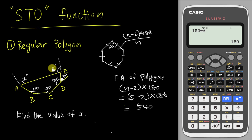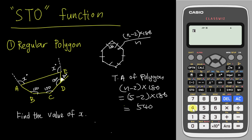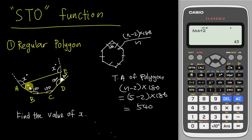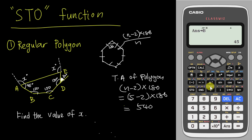Now I know the pentagon total is 540°. I tell the calculator: 540 minus 3 times A (using alpha A). The calculator gives 90°, which is the sum of both unknown angles. So each angle is 90 ÷ 2 = 45°. I store 45 into B. Then the whole angle here is 150°, so I do 150 minus B. The calculator tells me the answer for x is 105°.